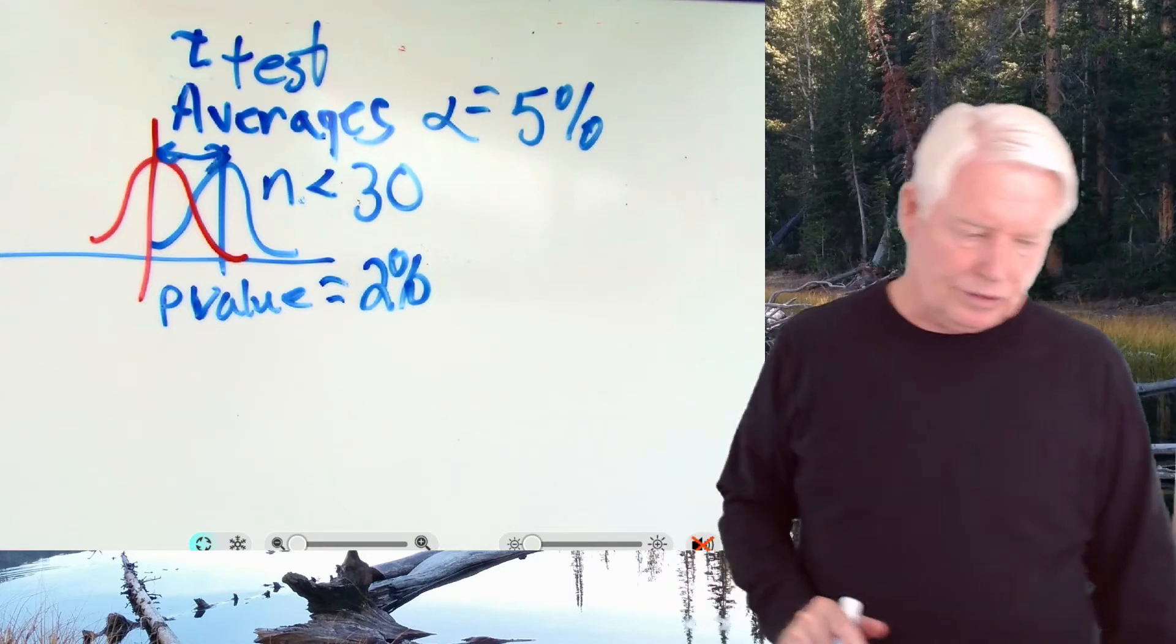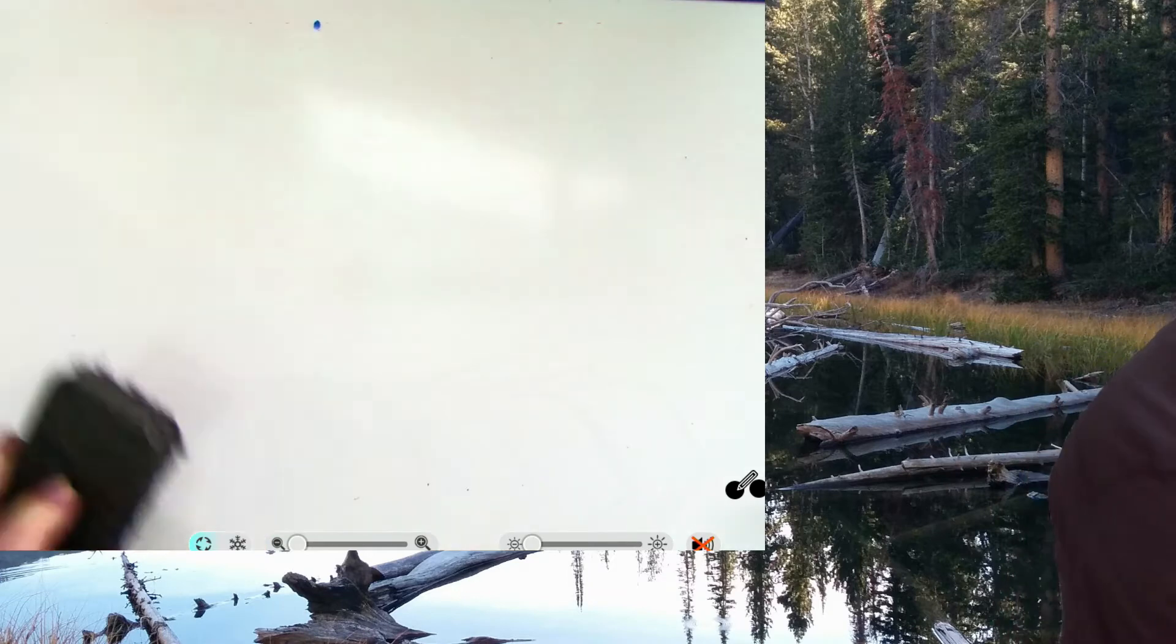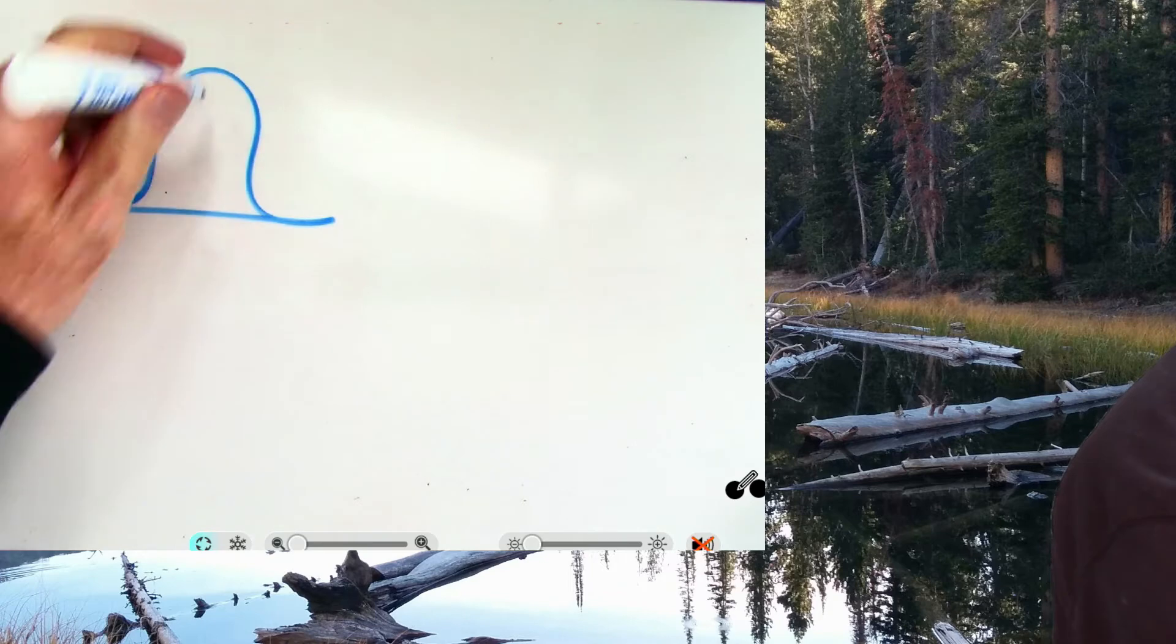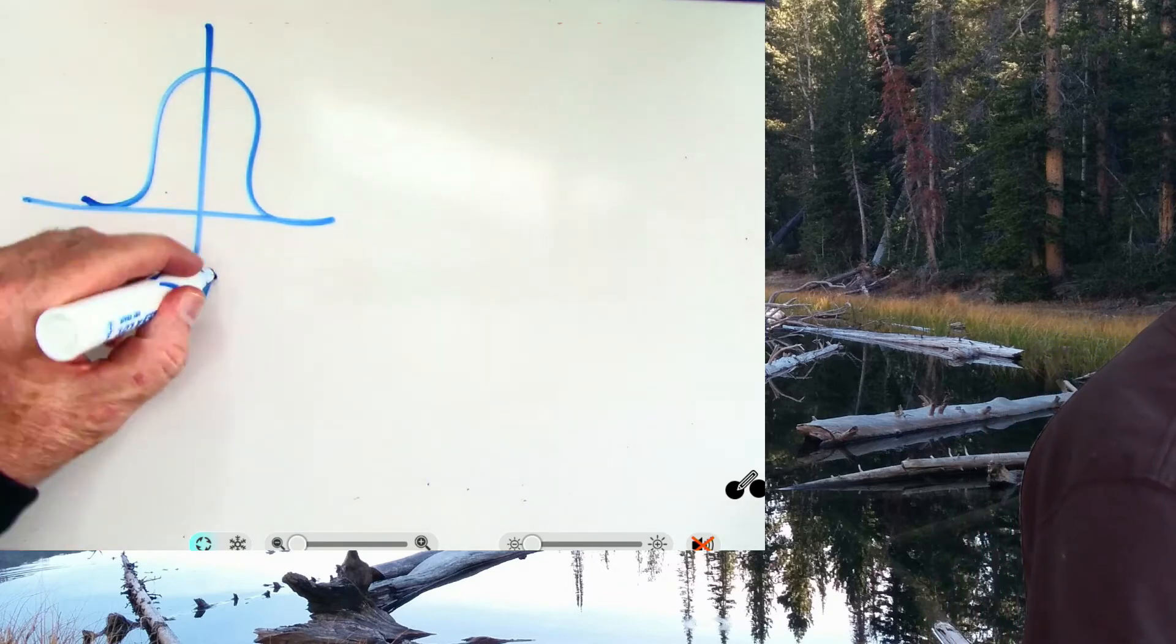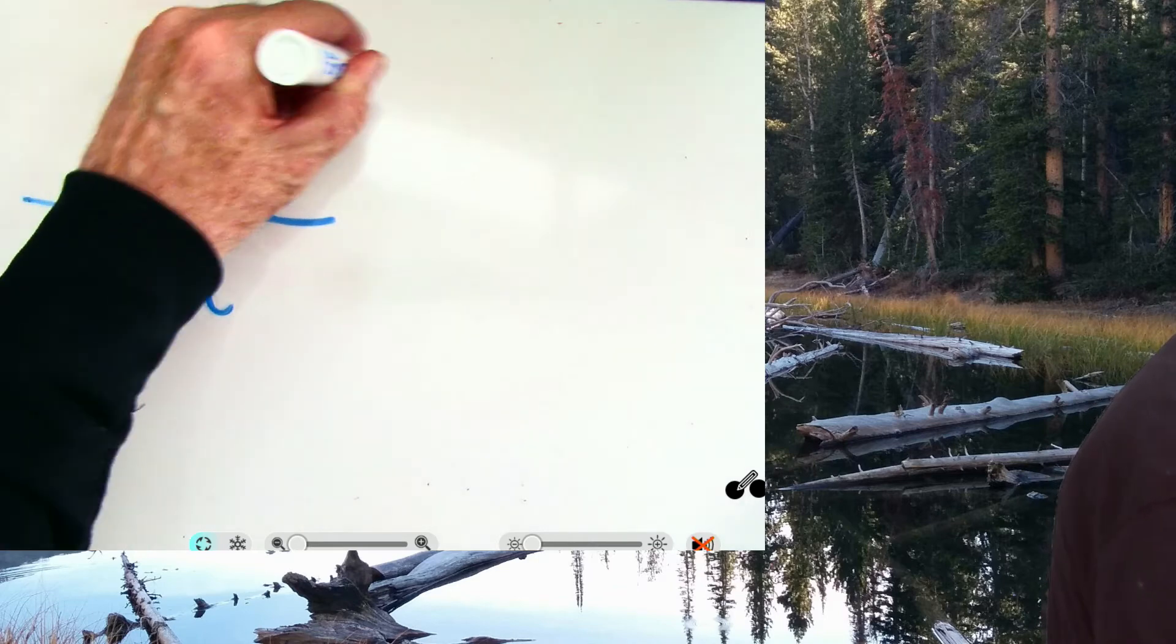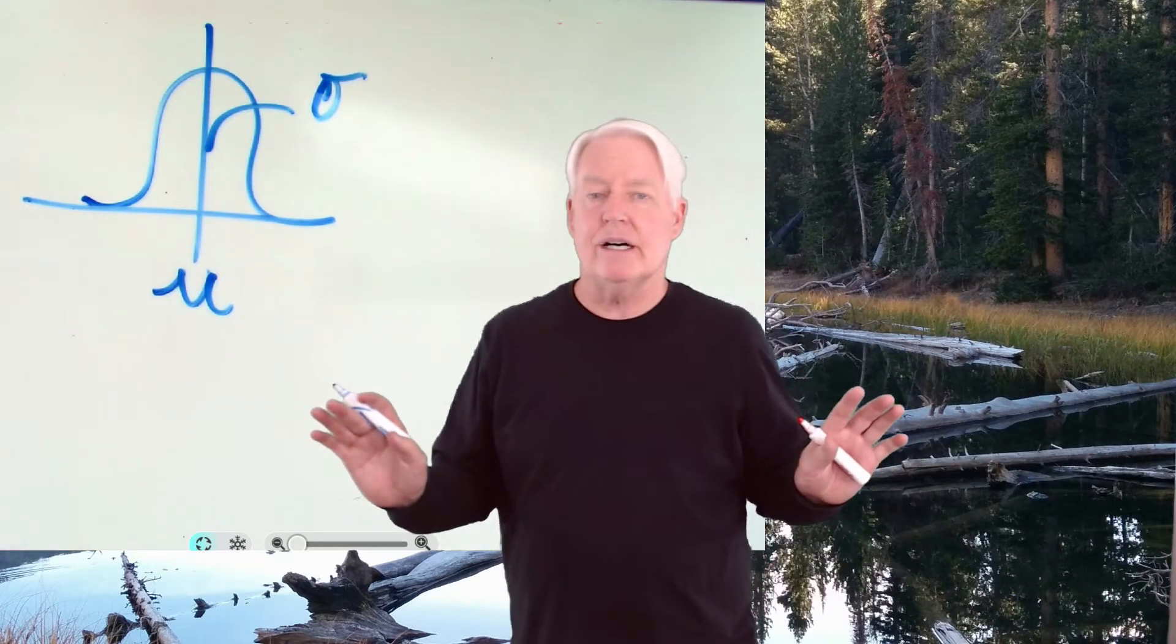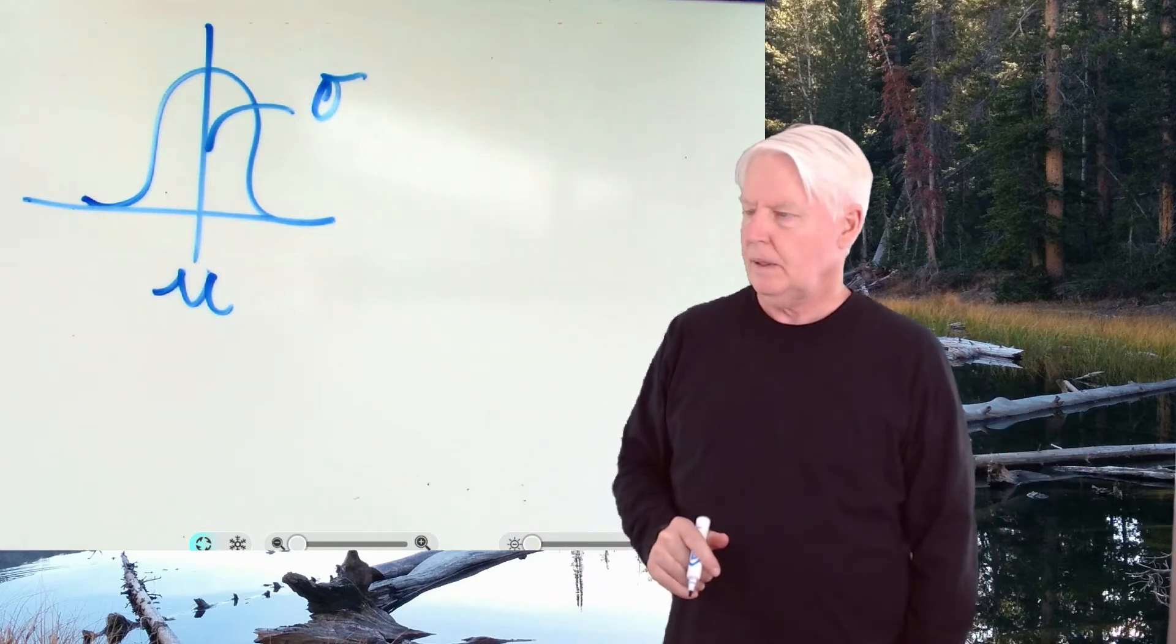First thing you have to understand, though, is we can describe the complete normal distribution with just two numbers. What are those two numbers? If you give me the average and the standard deviation, those are the only two things I need to know to completely understand the normal distribution.